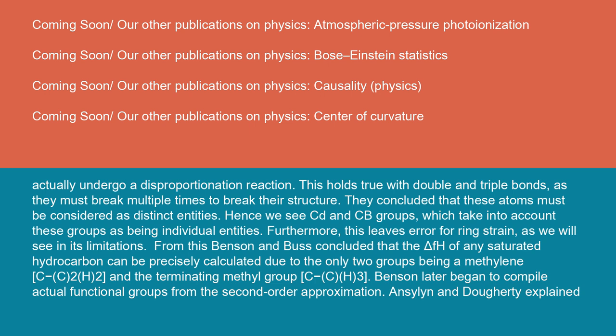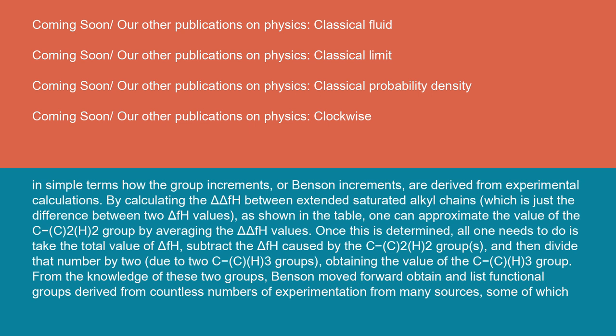Anselin and Doherty explained, in simple terms, how the group increments, or Benson increments, are derived from experimental calculations. By calculating the ΔΔH°f between extended saturated alkyl chains, which is just the difference between two ΔH°f values as shown in the table, one can approximate the value of the C-(C)₂(H)₂ group by averaging the ΔΔH°f values. Once this is determined, all one needs to do is take the total value of ΔH°f, subtract the ΔH°f caused by the C-(C)₂(H)₂ groups, and then divide that number by two due to two C-(C)(H)₃ groups, obtaining the value of the C-(C)(H)₃ group. From the knowledge of these two groups, Benson moved forward to obtain and list functional groups derived from countless numbers of experimentation from many sources, some of which are displayed below.